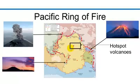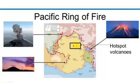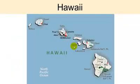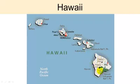The third way that volcanoes can be formed is through the action at hotspots. Hotspots do not necessarily form along a plate boundary. Hotspot volcanoes can form in the middle of a tectonic plate. Here's an example of a hotspot right in the middle of the Pacific plate, with North America and the west coast of the United States for reference. The answer is Hawaii – the Hawaiian island chain is a series of islands formed by the Pacific plate traveling over a hotspot in the middle of the Pacific plate.